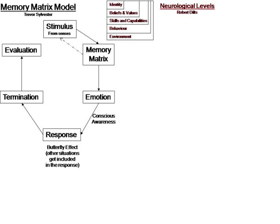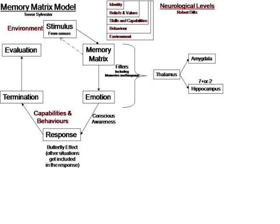So we get our stimulus from the environment, and our response is all to do with our capabilities, skills, and behaviours. Now let's look at the way we access that memory matrix. This information goes from our senses into our thalamus — it's like a switching section in the brain — and heads off in two different directions. A lot of low-quality but high-volume information gets stored in the amygdala, whereas the hippocampus is where we store very detailed memory. The amygdala stores the feelings of a significant emotional event; the hippocampus stores information for cognitive analysis.